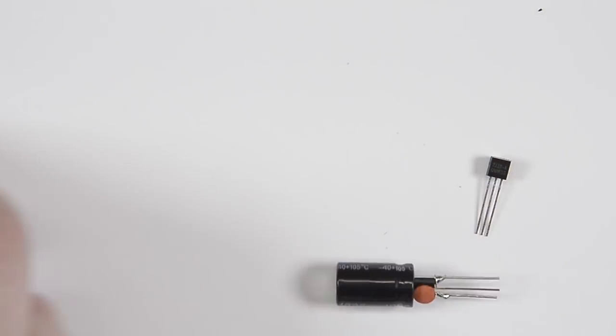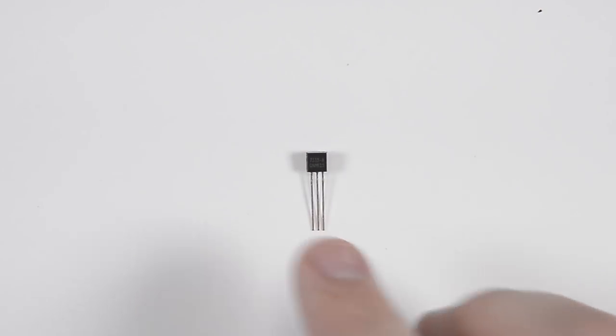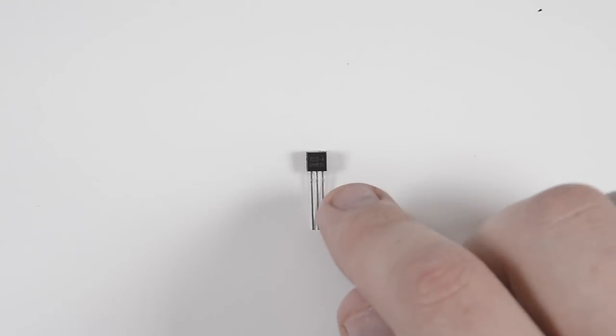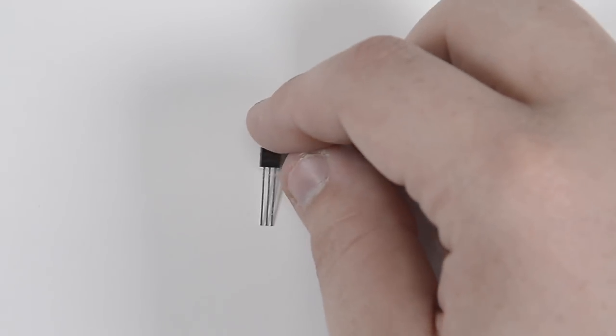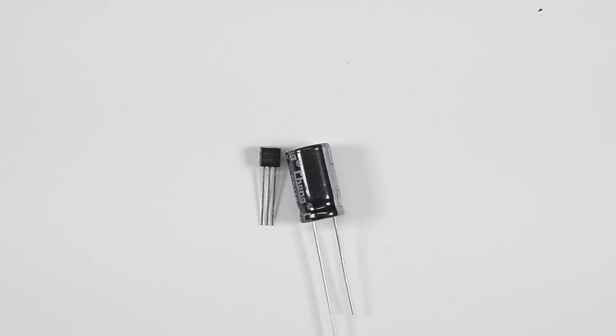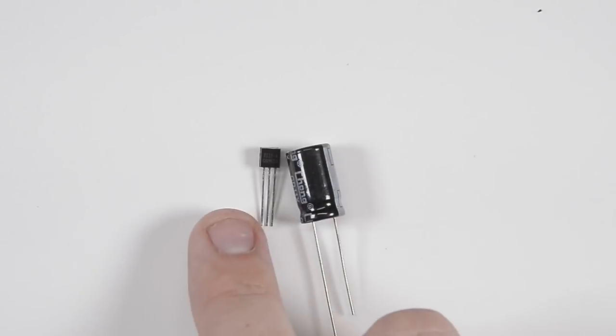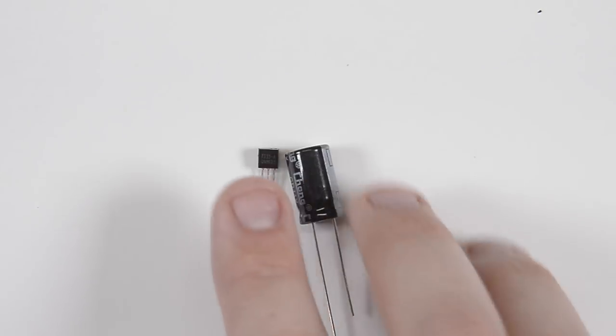Now I know that looks like a transistor, a BJT transistor, but in fact it is an HT7333-A voltage regulator. And there's a couple nice things about this. First of all, it's tiny. Look at it compared to the size of the capacitor there. It's the same size as the actual can. It's in the same package as a regular BJT transistor. But the other really nice thing about it is it's a low dropout voltage regulator.